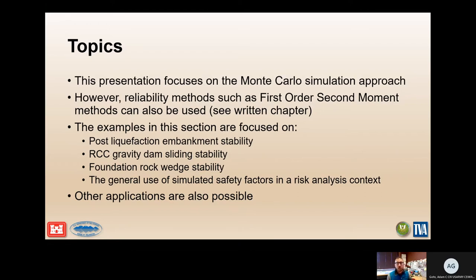Reliability methods such as first-order second-moment can also be used. First-order second-moment is similar to a Monte Carlo simulation, except that instead of running 10,000 iterations, you're only running a few — typically one iteration for the low, best, and high estimate of each input parameter. If you have three input parameters and run three iterations for each — low, best, and high — that's about nine iterations total.